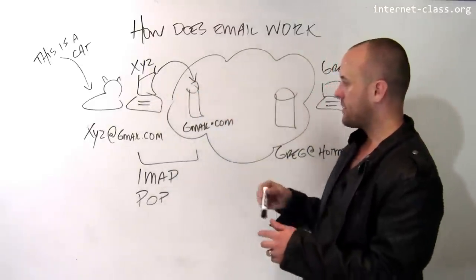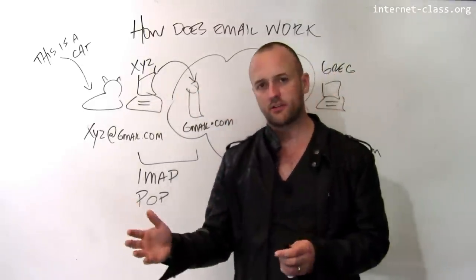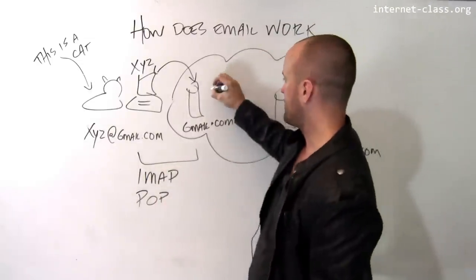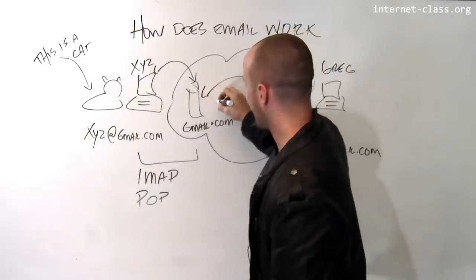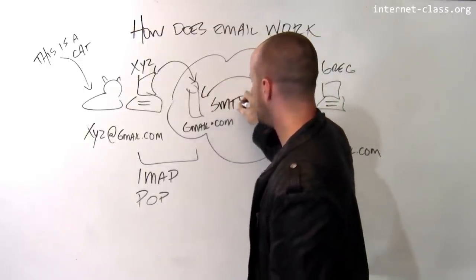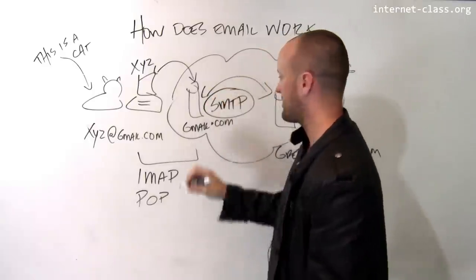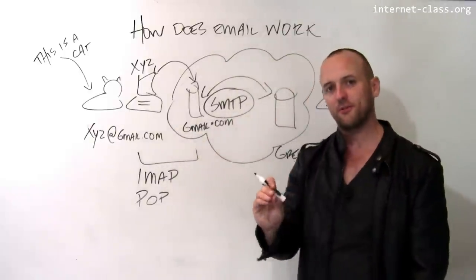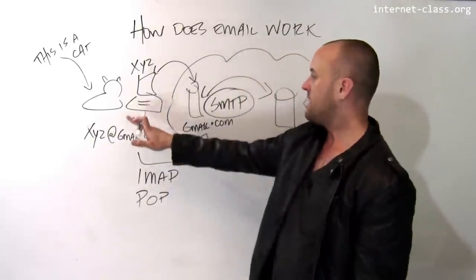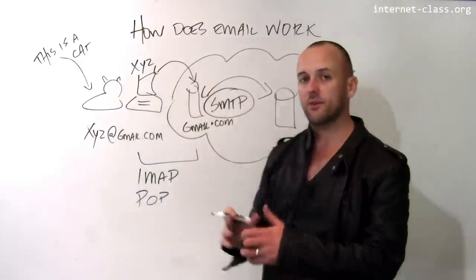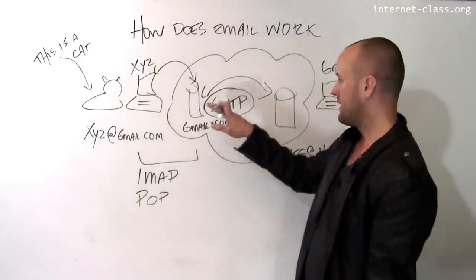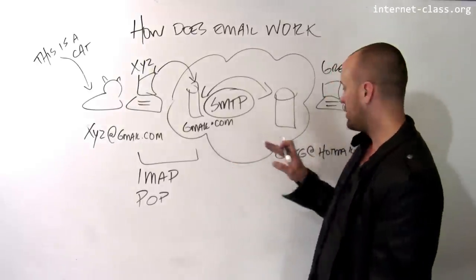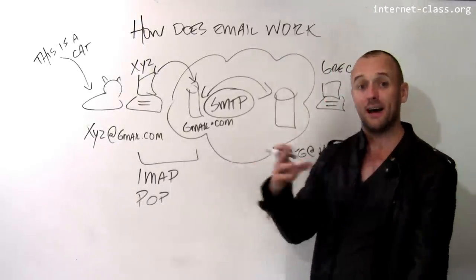When Ziz's computer successfully tells Gmail that she wants to initiate a message transfer, the message actually hasn't reached Greg's mail server yet. So Gmail uses another protocol called SMTP — the Simple Mail Transfer Protocol. SMTP is what mail servers use to communicate with each other. Once Ziz tells Gmail's mail server she wants to send mail to greg at hotmail.com, Gmail will start the process of transmitting that message across the internet using SMTP to the mail server run by hotmail.com.